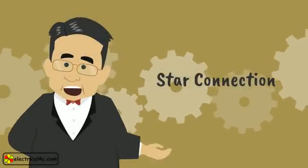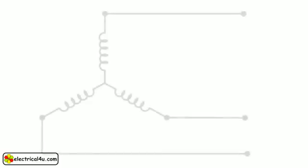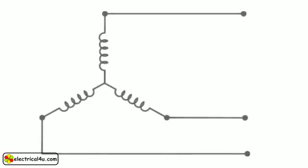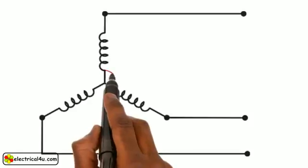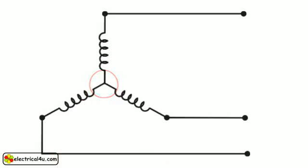Let us discuss star connection. The star connection is shown here. Star connection is normally used in three-phase systems. In star connection there are three windings. When we connect the finishing ends of three windings together, it forms a star connection.